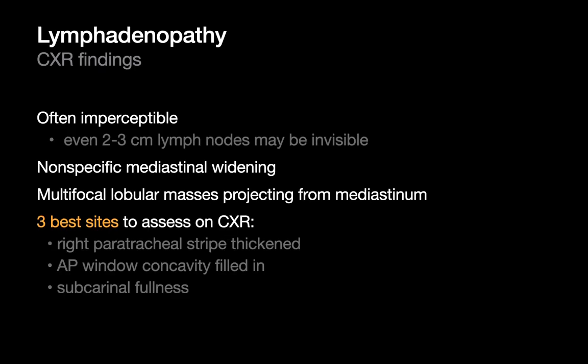Lymphadenopathy is the most common cause of a mediastinal mass. On chest x-ray it is very often invisible; however, there are some high-yield anatomic sites we should always try to assess: the right paratracheal stripe — whether it's thickened or not — the AP window, whether that concavity is filled in or not, and subcarinal fullness. The right paratracheal stripe is usually a very thin stripe, less than 2 mm, basically a thin white line on a PA chest x-ray, created by air within the right lung and air in the tracheal lumen bordering the thin right lateral tracheal wall.